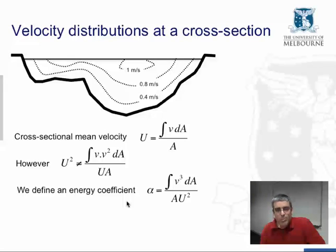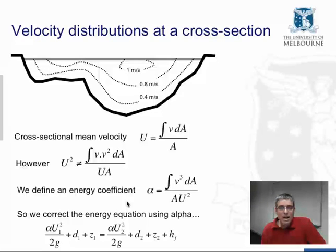To overcome this problem, we define an energy coefficient alpha, which is calculated in this way. And we add alpha to our energy equation to correct it for this difficulty. So the alpha term multiplies the kinetic energy term, which is based on the mean cross sectional velocity. And alpha is generally greater than one, 1.2 or so.